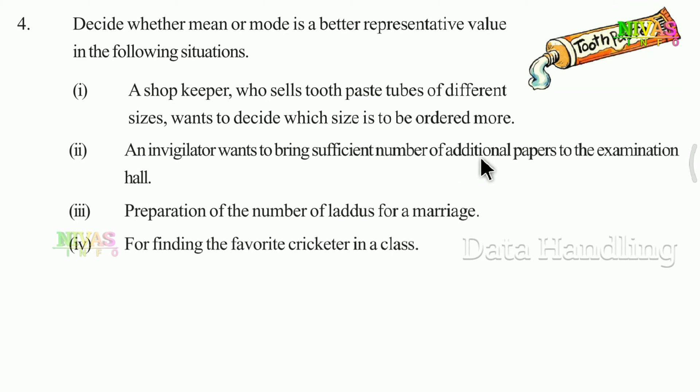Second situation: An invigilator wants to bring sufficient additional papers to the examination hall. Additional papers vary — for example 20 or 30 or 40. Here mode is the better measure, because the invigilator needs to know the most commonly required number of papers. So the answer is mode.